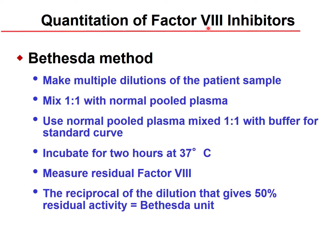Quantitation of factor 8 inhibitors uses the Bethesda method. Multiple dilutions of the patient sample are mixed 1:1 with normal pooled plasma, incubated for at least 2 hours, and residual factor 8 is measured. The dilution that gives approximately 50% residual activity is defined as one Bethesda unit. For very potent anticoagulants, many more dilutions are required before inhibition disappears.